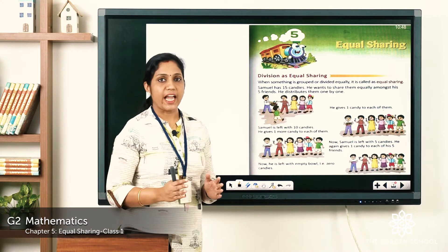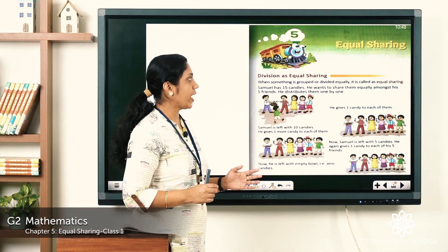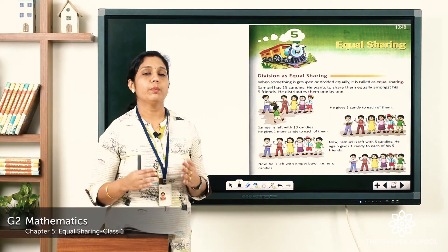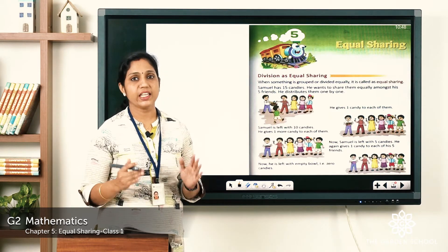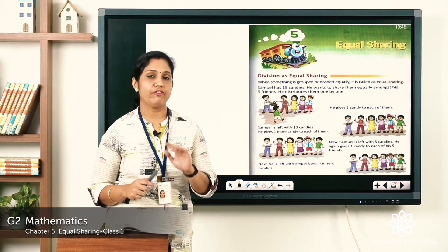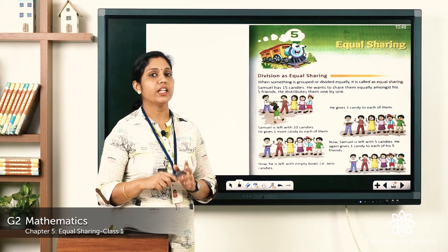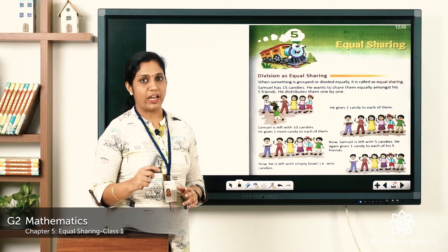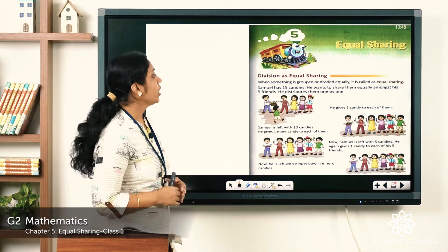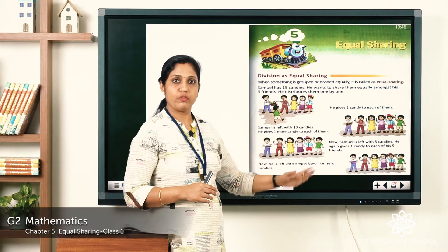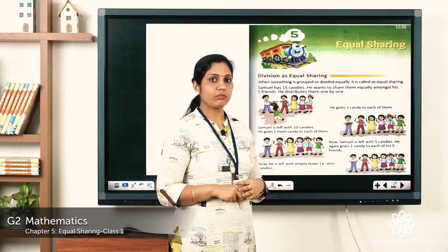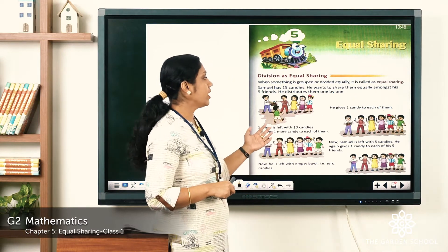Samuel has 15 candies. He wants to share them equally amongst his five friends and distributes them one by one. The number of candies is 15 and the number of friends is five. First, he gives one candy to each of them.